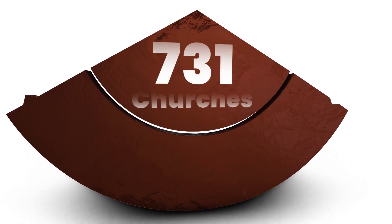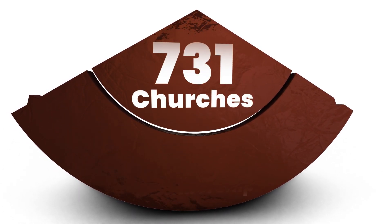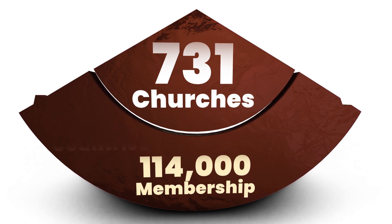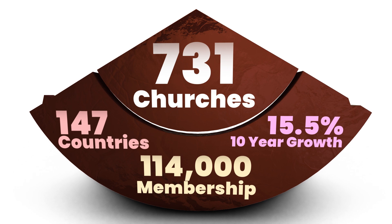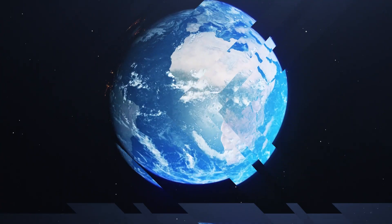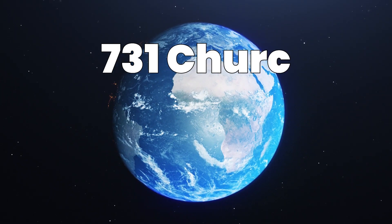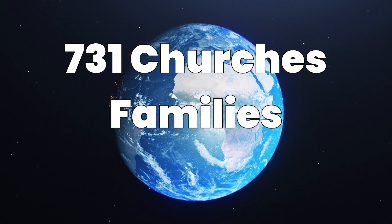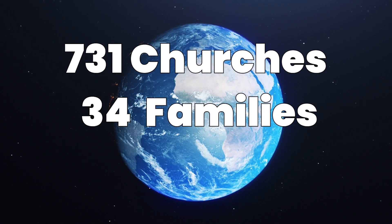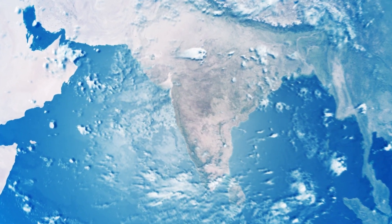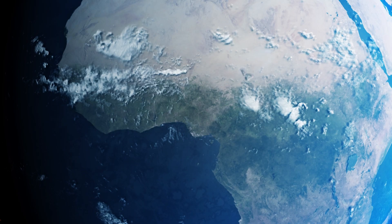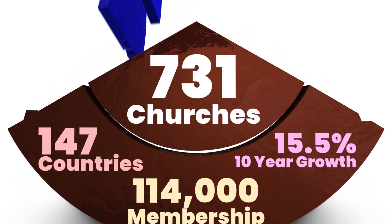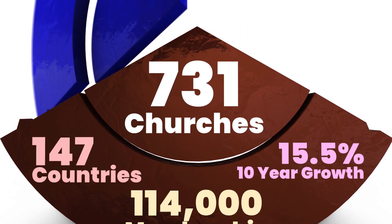The International Churches of Christ is a fellowship of 731 churches, with a membership of 114,000 in 147 countries. These churches range in size from a couple dozen to over a thousand. These 731 churches are organized into families, and we have 34 families of churches — for example, the Indian family of churches and the French-speaking West Africa family of churches.